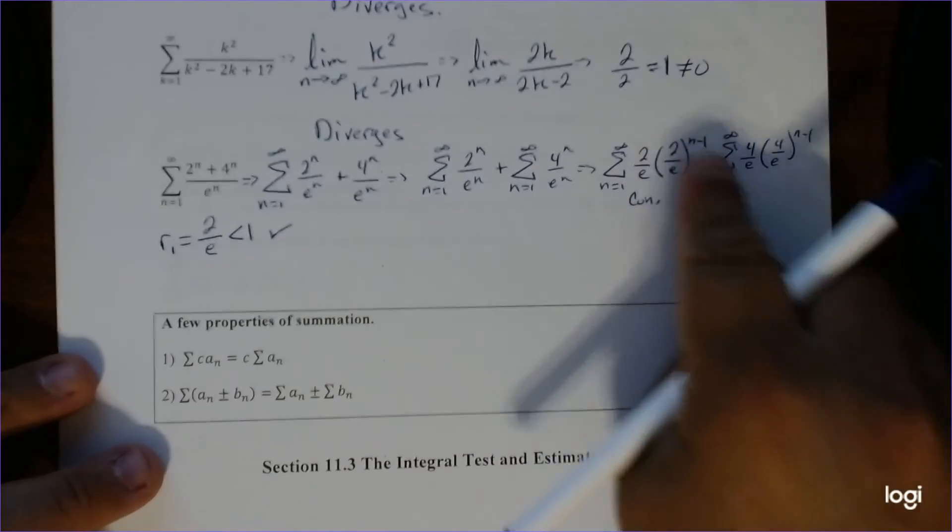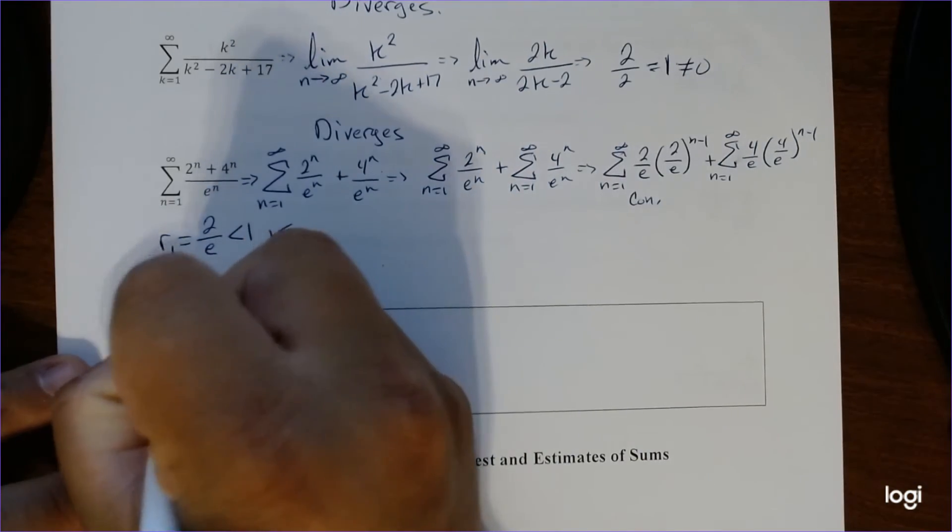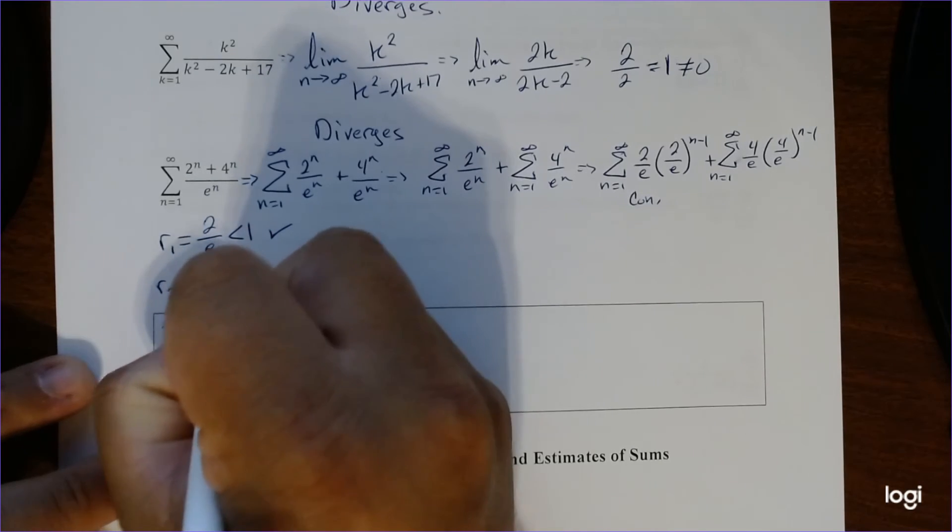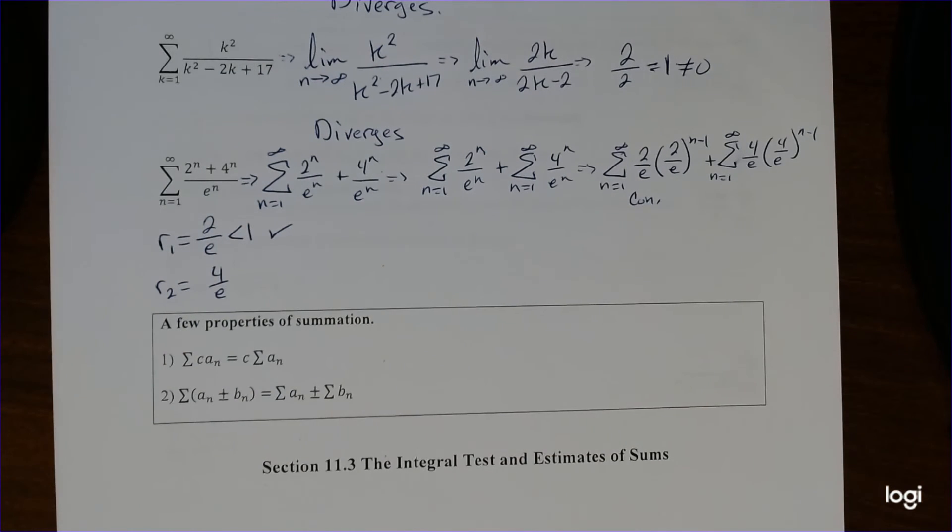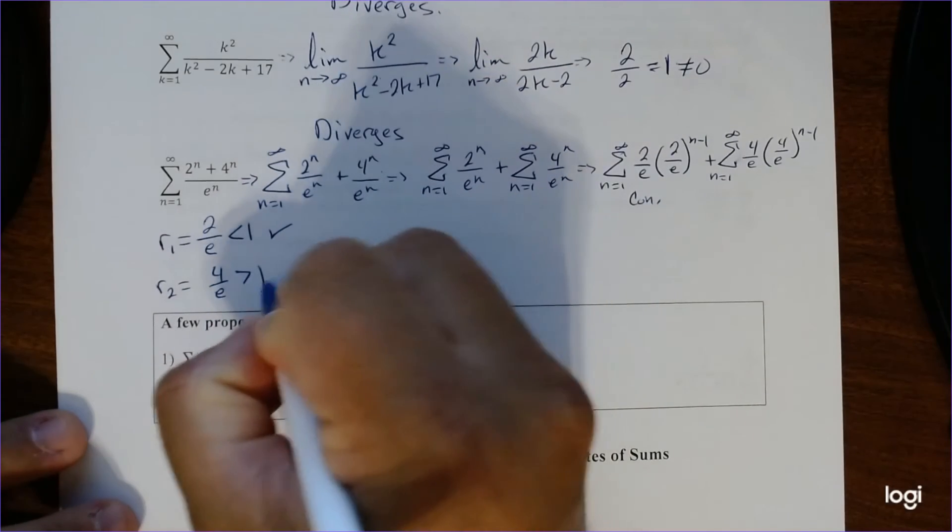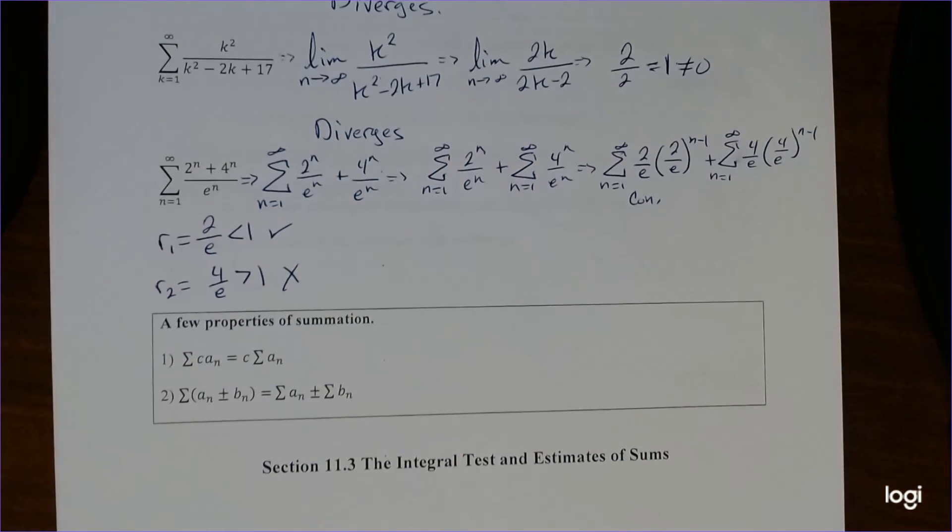Now let's test the other one. We'll call that R2. So this is 4 over e. And again, 4 divided by 2.7 gives you, well, I don't know what it is, but it is greater than 1, right? That's all we care about. So this is actually greater than 1. So this diverges.